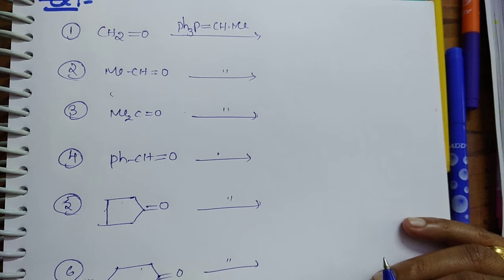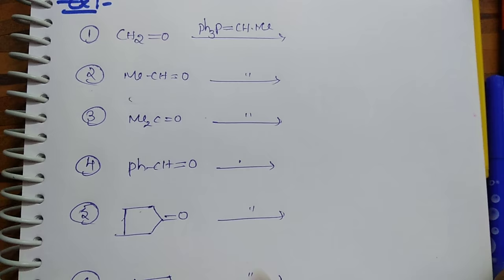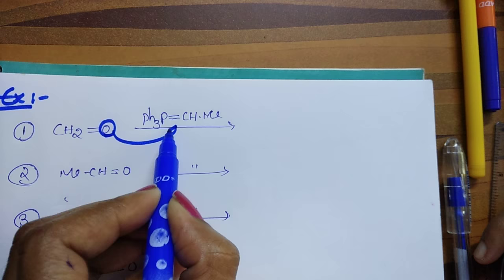Here we can prepare alkenes directly from aldehydes and ketones with increase in the number of carbon atoms. Actually, what is the trick, students? This oxygen exchanges with this Wittig reagent, with this CHMe group comes here.